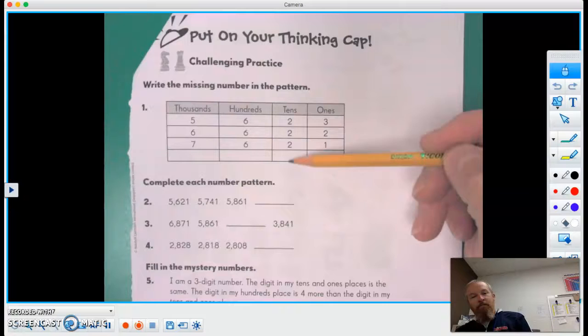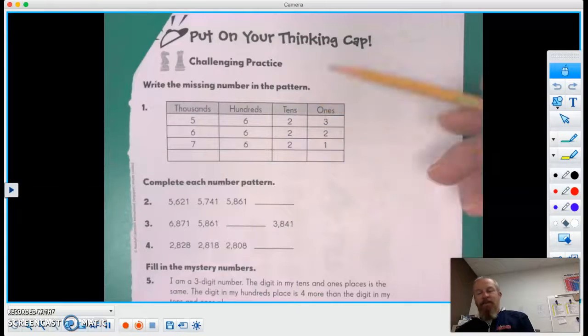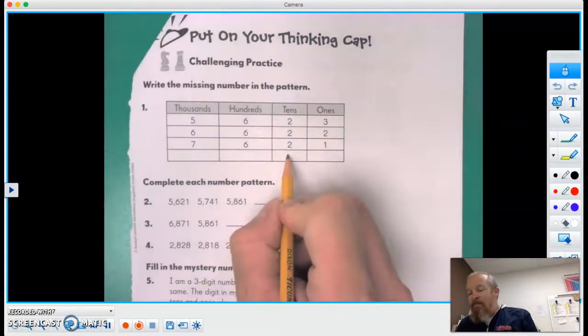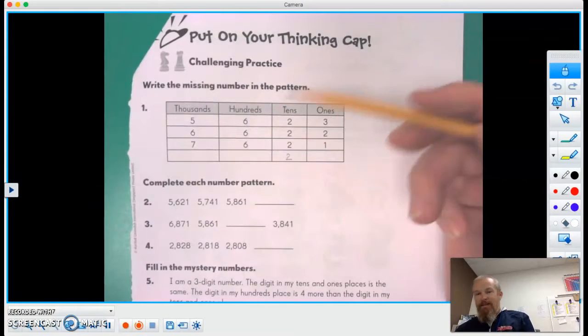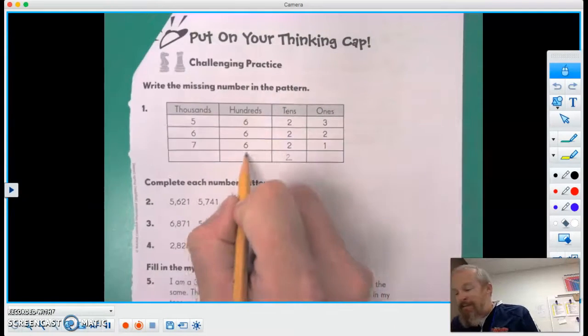Look at the tens column in each of those, so that's a two. I think that's going to be a two this time. See, there's a six in each one of those again. I think let's try the six there, okay?